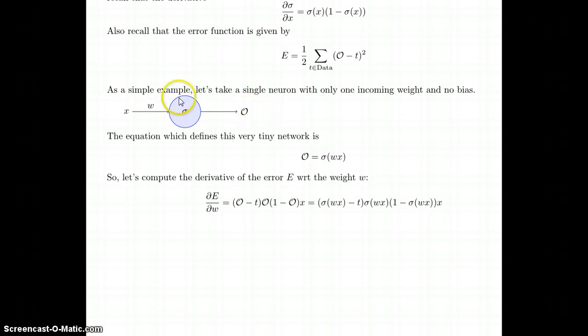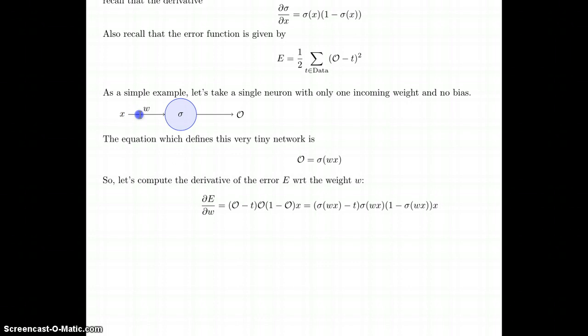As a simple example, let's just take a single neuron with only one incoming weight and no bias. I have some input value x, I have a weight w that connects that input to the node, the neuron we're looking at, which has a transfer function sigma. When you evaluate that, you get output script O. The equation which defines this is very simple: script O equals sigma of wx, the weight times the input.